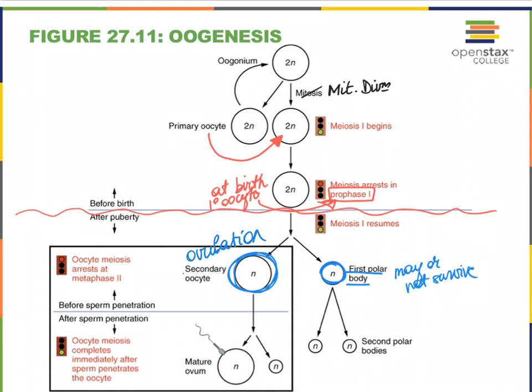Now the secondary oocyte before it can be penetrated by a sperm cell is going to continue with meiosis II and then arrest in metaphase II. So our primary oocyte was arrested in prophase I. Our secondary oocyte that is ovulated is arrested in metaphase II. So when we release an egg by means of ovulation, it never finishes meiosis II. It is stopped halfway through meiosis II, namely in metaphase II. It will never finish meiosis II unless it becomes fertilized by a sperm cell.